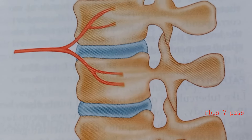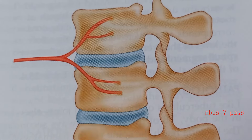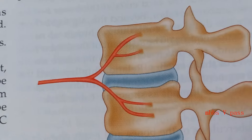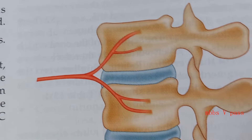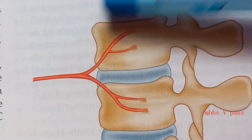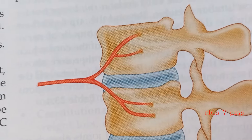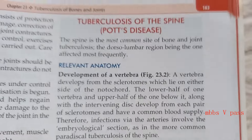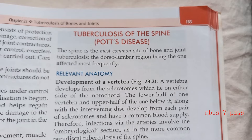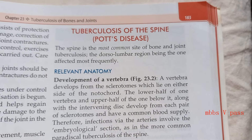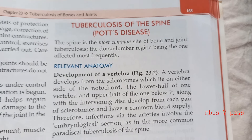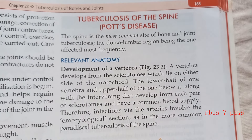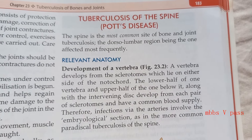Look at this — they are talking about blood supply. Two of them share the blood supply, so what happens is the infection can spread to both. This is very important in tuberculosis of the spine. Pott's disease is the most commonly affected part because of tuberculosis of the spine.